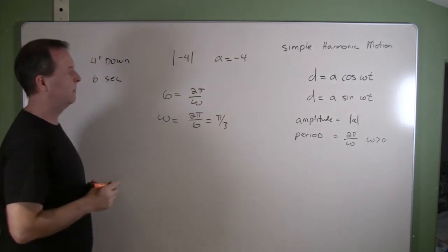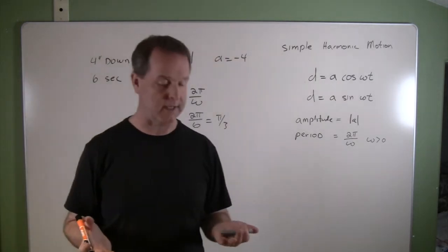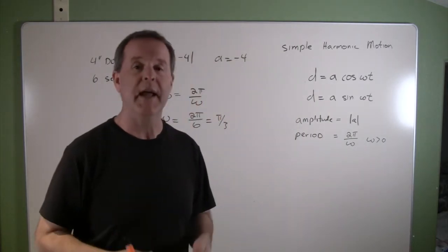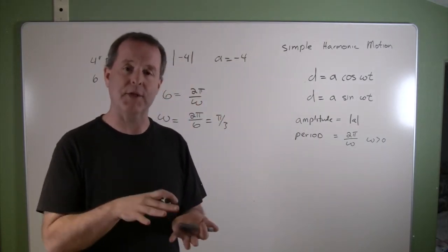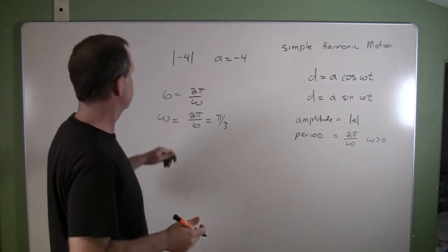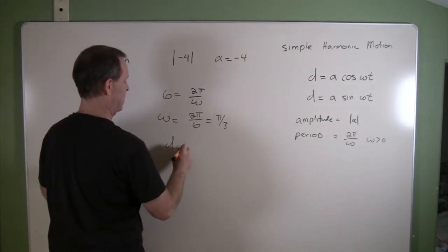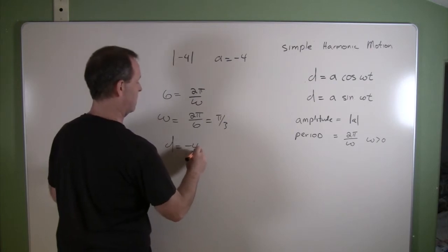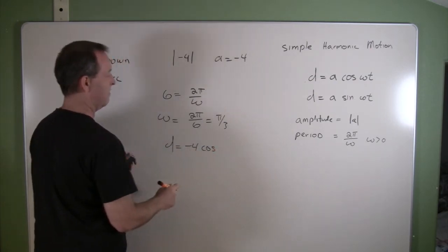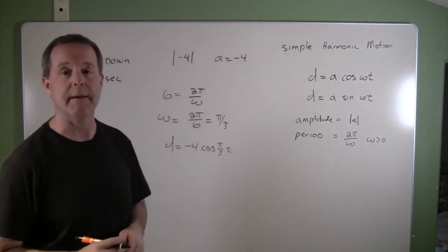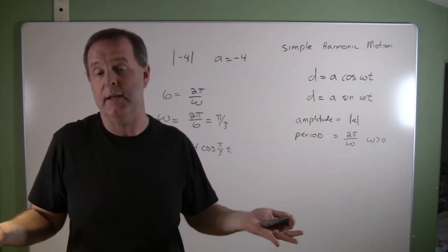So I have all the information now that's going to be helpful for me to determine what is its distance from its origin over time. So I'm going to look at distance: it was negative four cosine, my omega is π/3, and it's a function of time. So that's how we can do it.